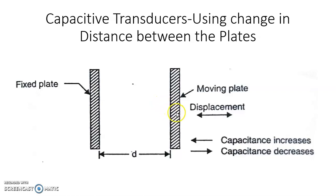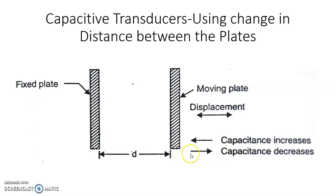The displacement of the movable plate is measured in terms of increase in capacitance. Similarly, if the movable plate is moved away from the fixed plate, the capacitance decreases, and displacement is measured in terms of that decrease. The direction of displacement is decided by whether the capacitance is increasing or decreasing.